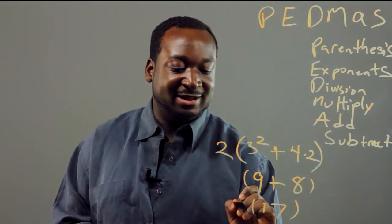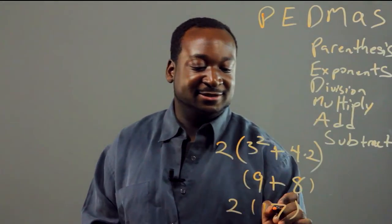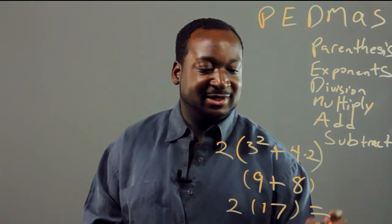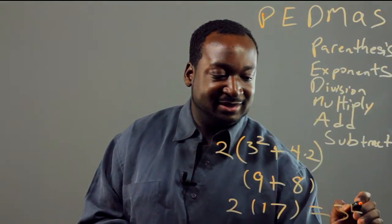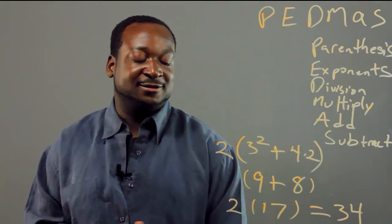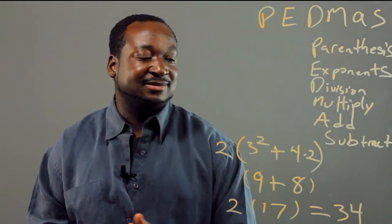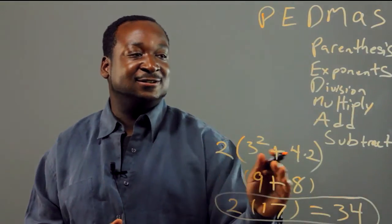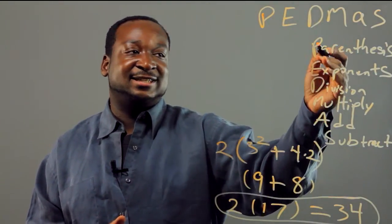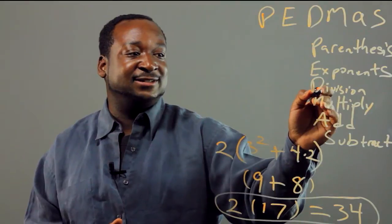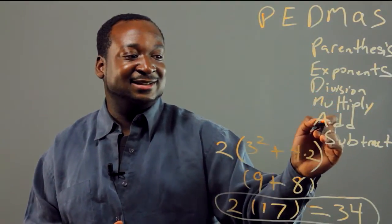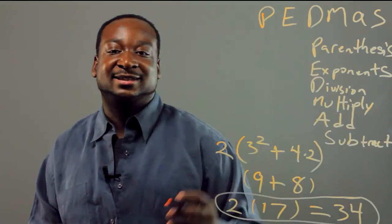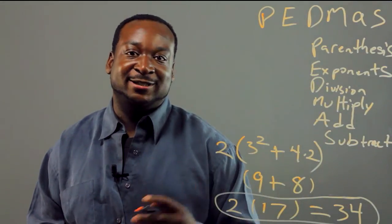And when we bring that 2 here, it's going to be 2 times 17, and that equals 34. And here's our answer. We solved this term using our basic steps: parentheses, exponents, division, multiplication, addition, and subtraction. And that's the list of our basic math facts that we always use.